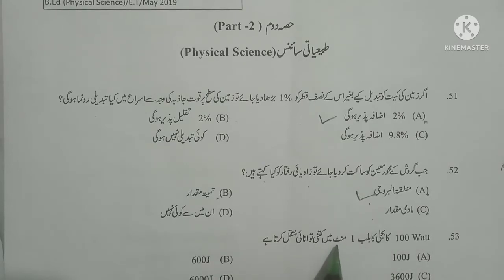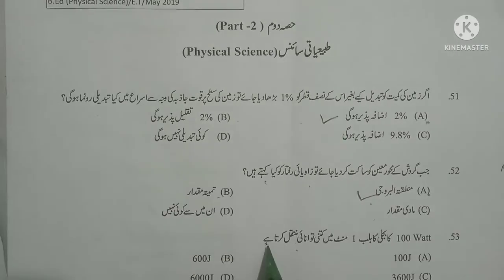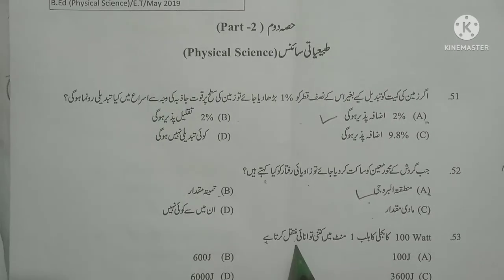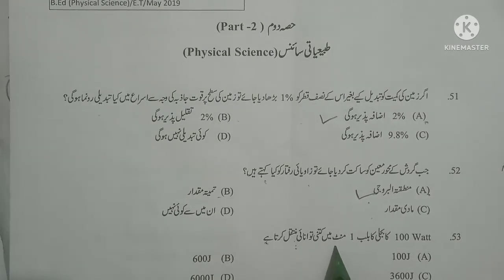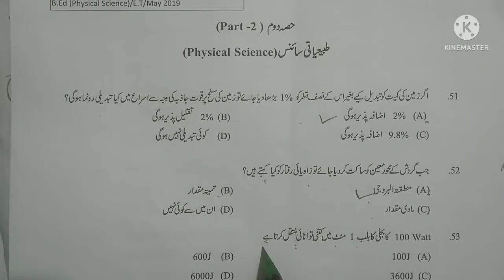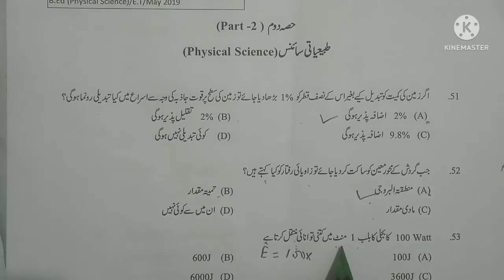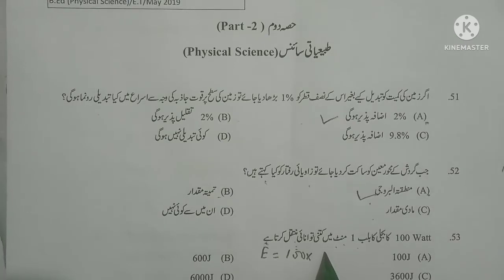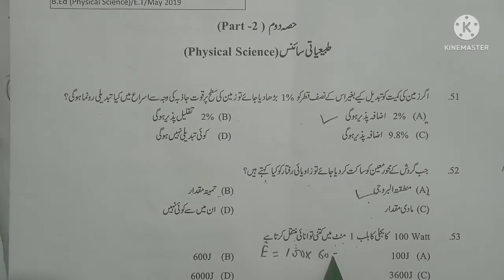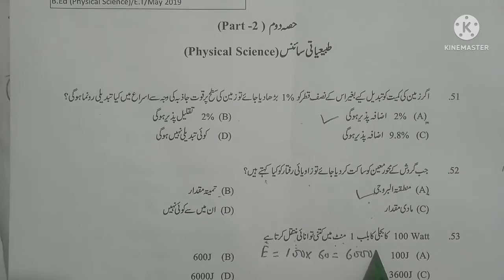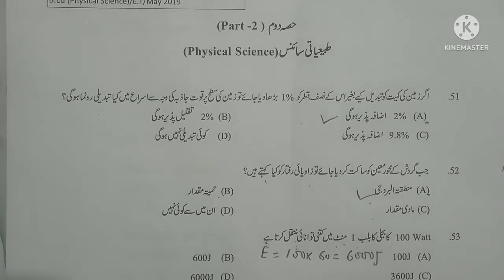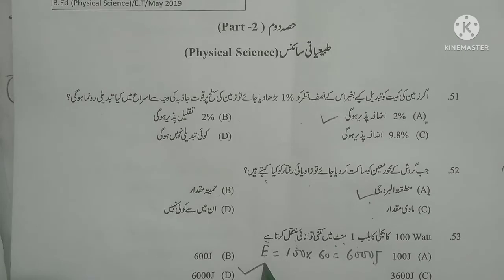Next question: 100 watt ka bijjli ka bulb ek mint mein kitni tawanai muntaqil karta hai? How much energy does a 100 watt light bulb transmit in one minute? As you know, power equals energy divided by time, so energy equals power multiplied by time. Power given is 100 watts, time is one minute — convert to seconds: 60. Therefore energy equals 100 × 60 = 6,000 joules. Correct answer is D.